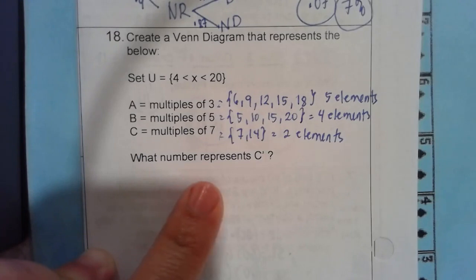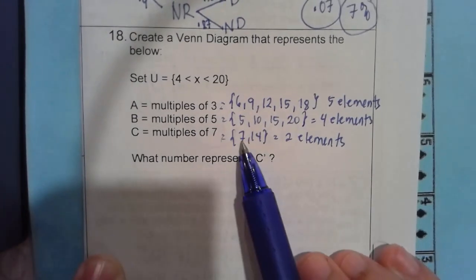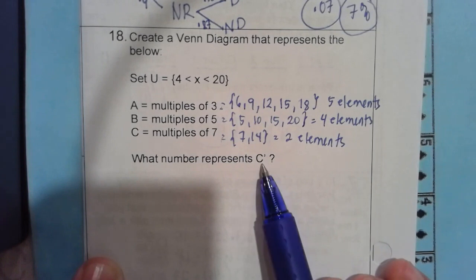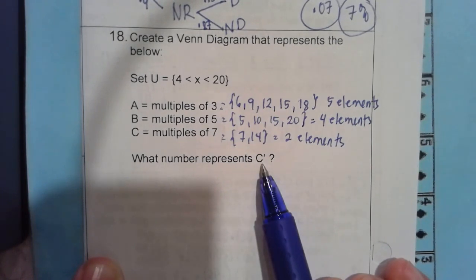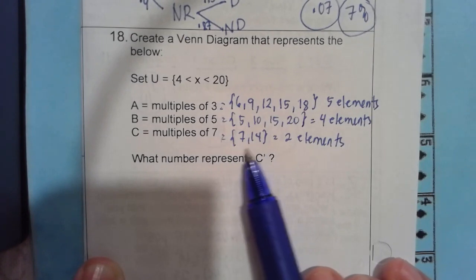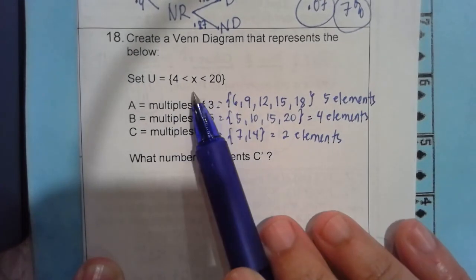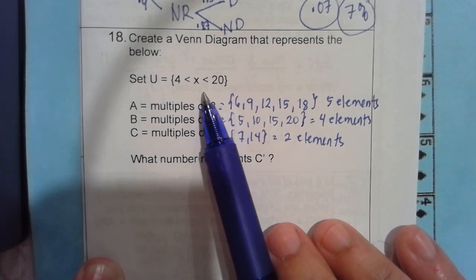Now, it says what number represents C prime? So if you set C, 7 and 14, prime are those numbers which cannot be seen in the set but can be found in the universal.